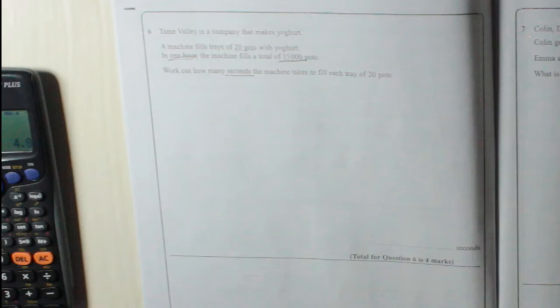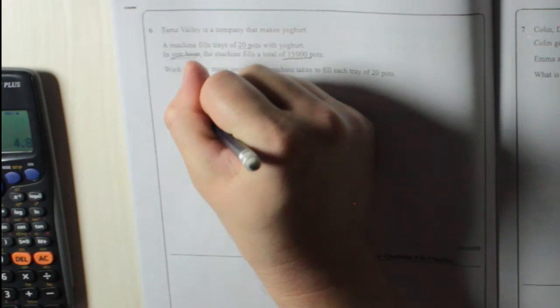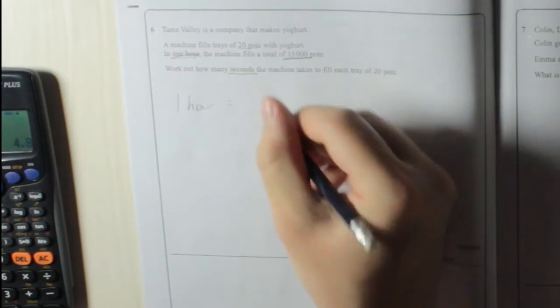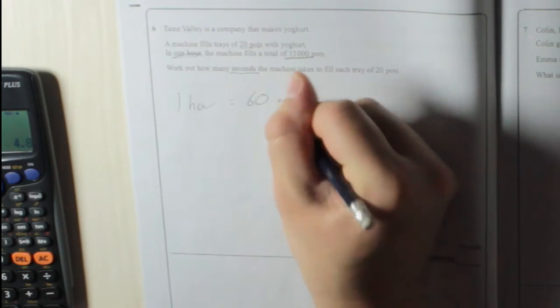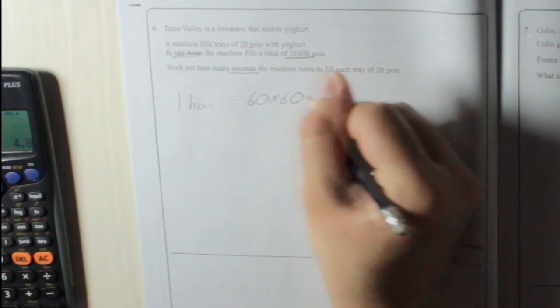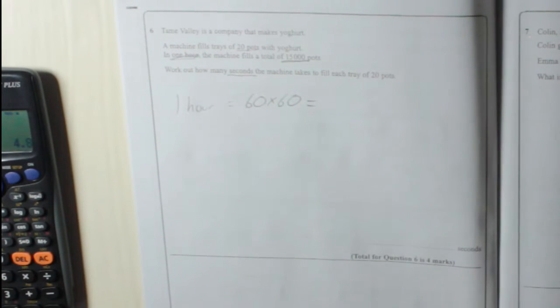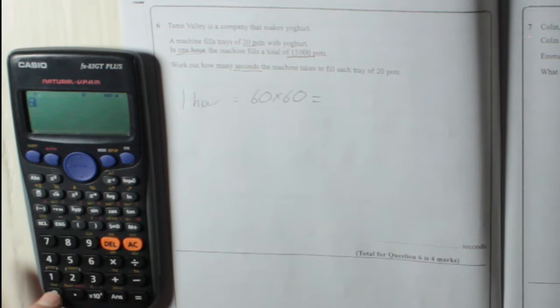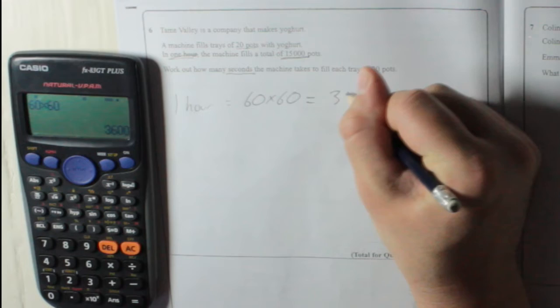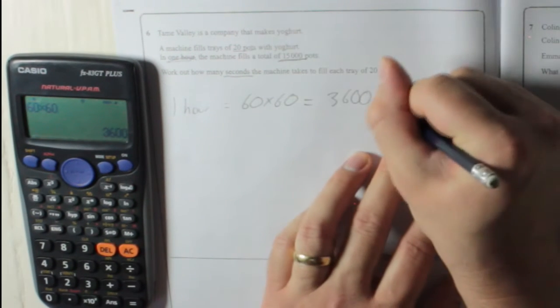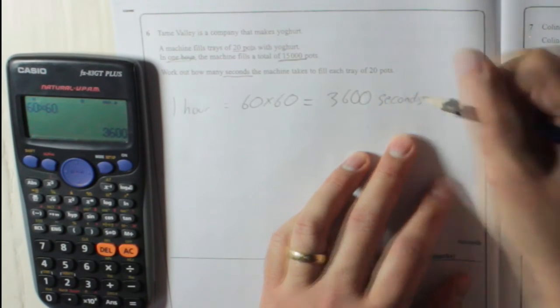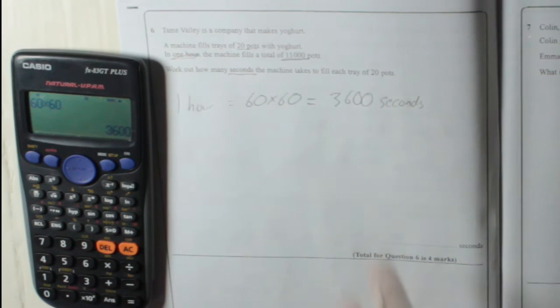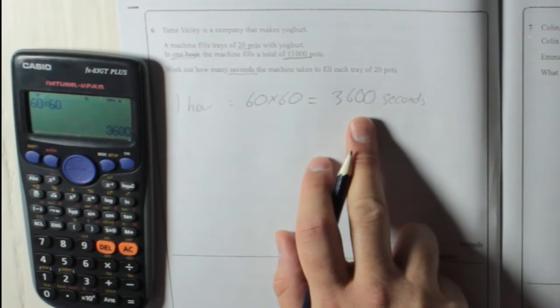Let's first put one hour in seconds. One hour equals 60 minutes times 60 seconds, because every minute has 60 seconds. So 60 times 60 is 3,600 seconds.